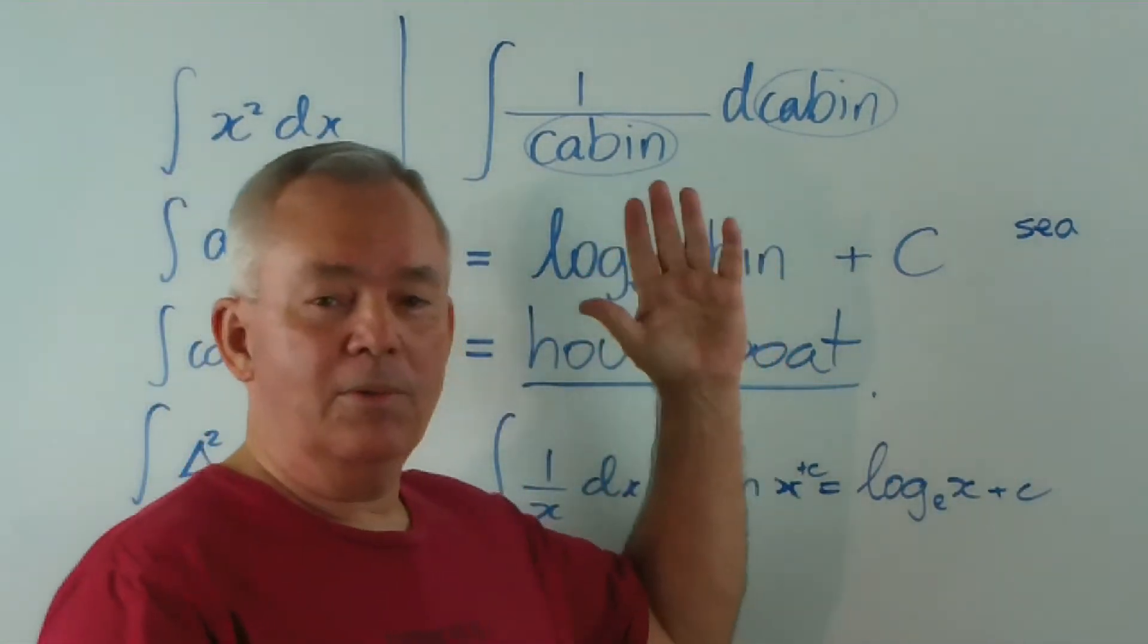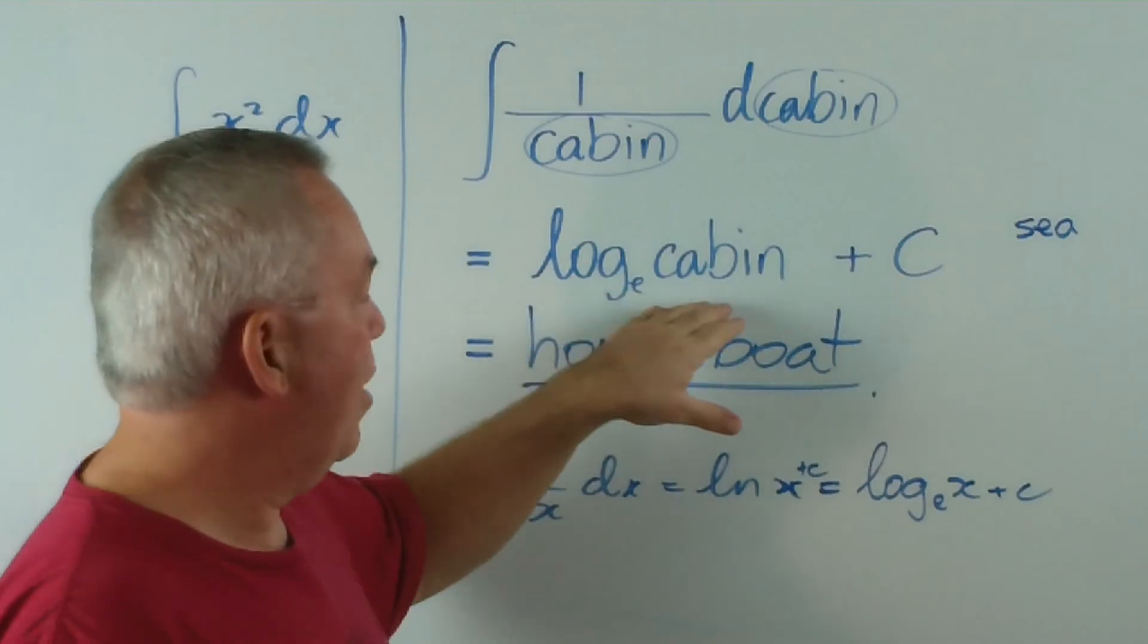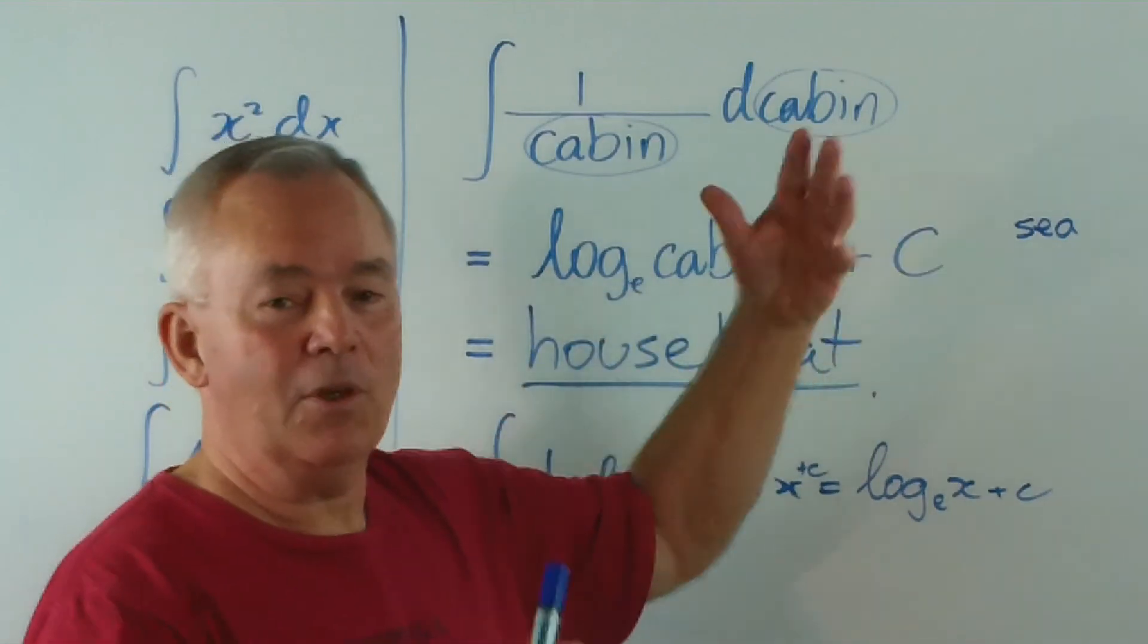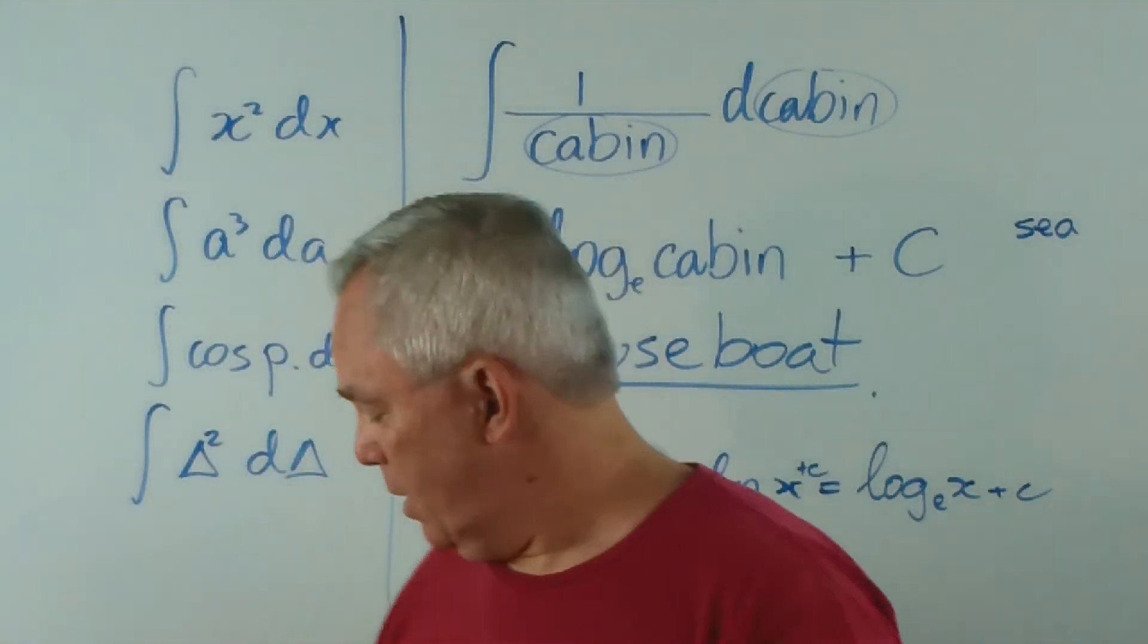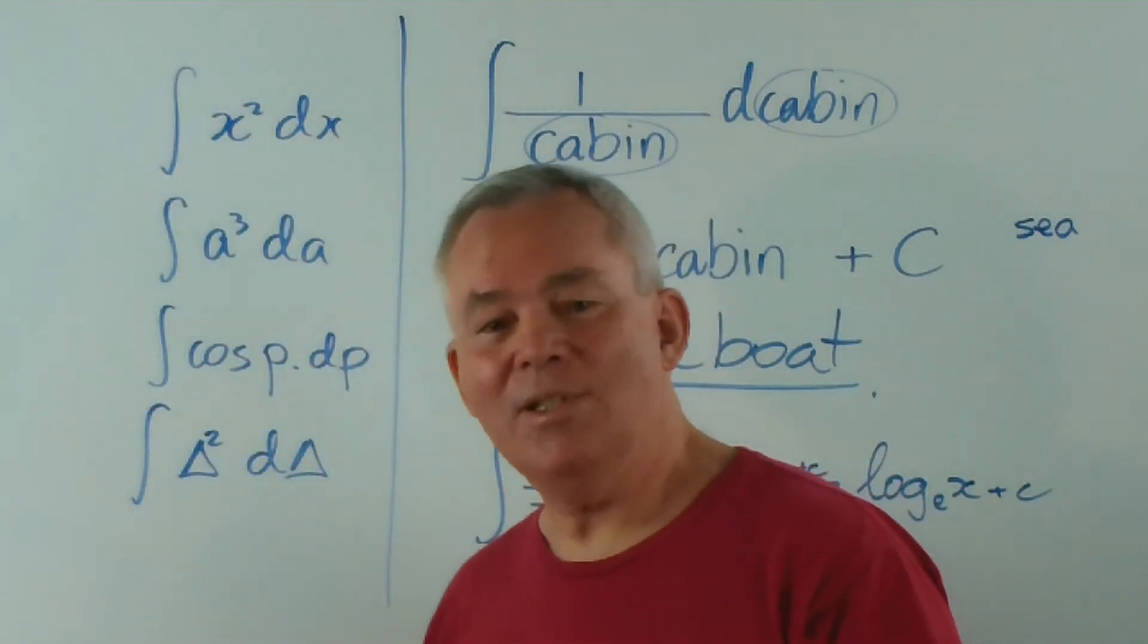What a strange way to remember it. 1 over cabin D cabin is log cabin plus C. So, if you've got a log cabin floating on the C, you have a houseboat. At least something like one.